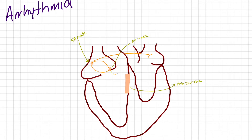From the AV node, our impulse travels to the bundle of His. From the bundle of His, our impulse travels down the bundle branches. It's important to note that in someone who does not have arrhythmia irregularities, the impulse is going to travel down the bundle branches at the same time, giving us a nice narrow QRS complex.